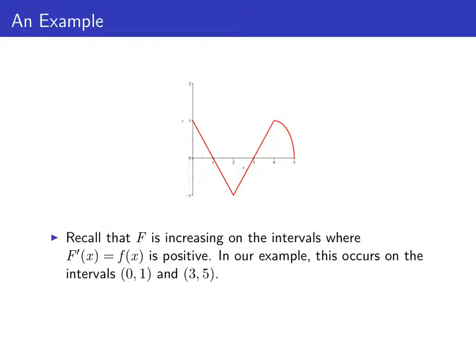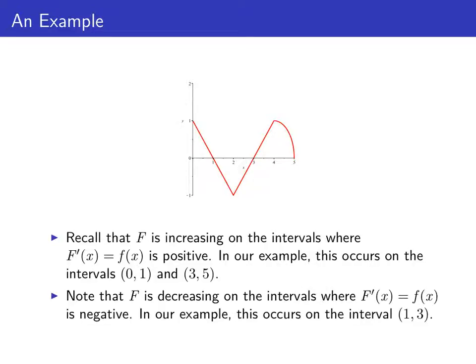Recall that a function is increasing on the intervals where its derivative is positive. In this example, the derivative — the graph of little f — is positive on the intervals from 0 to 1 and from 3 to 5. We don't include 1 and 3 because that's where the derivative is zero. Big F is decreasing on the intervals where the derivative is negative, which is on the interval from 1 to 3.